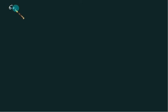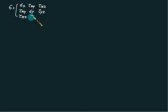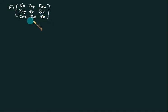We have a stress matrix which is given as: sigma_x, tau_xy, tau_xz; tau_xy, sigma_y, tau_yz; tau_xz, tau_yz, sigma_z. This matrix is symmetrical about the diagonal — that is the information given in the stress matrix.